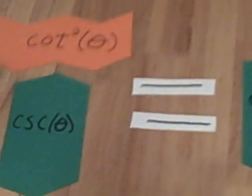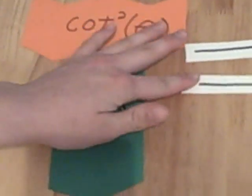So, the last problem that we are going to do is cotangent squared divided by cosecant, which is going to equal cosecant minus sine.